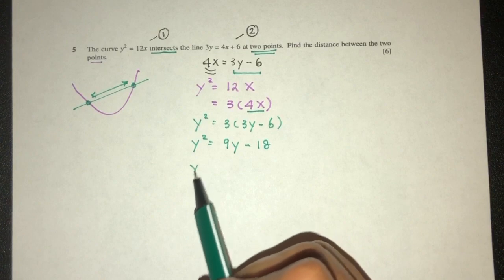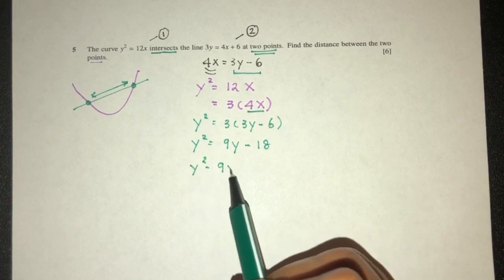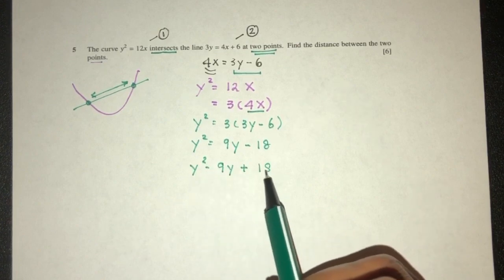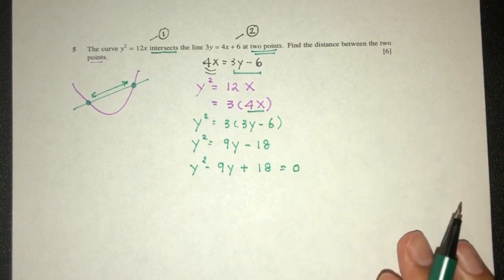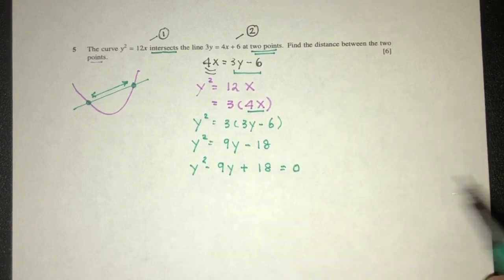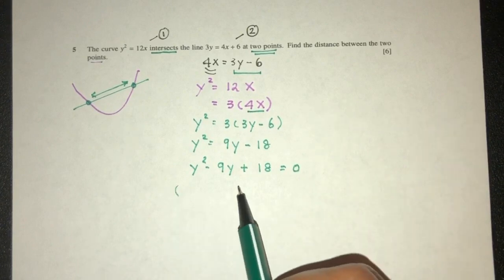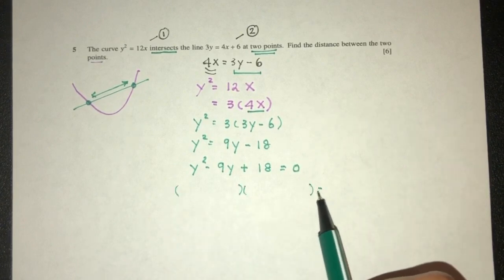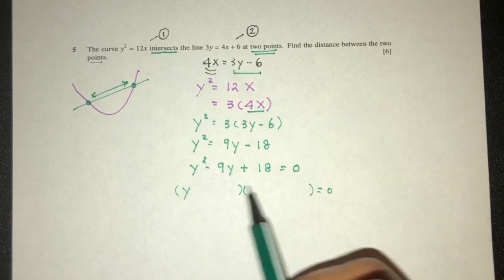Simplify. Y squared minus 9y plus 18 equal to 0. Now we can try to factorize obviously because this one is a quadratic equation. That will be this and this equal to 0. Y squared is obviously y times y.